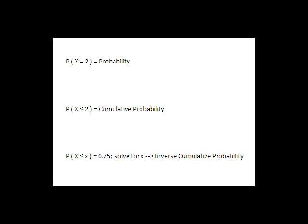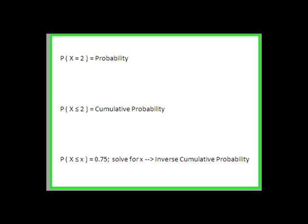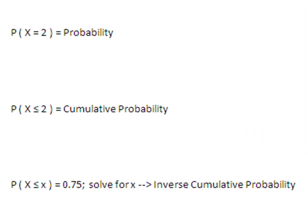The first type of probability that Minitab can compute is an equals probability, like the probability that x equals 2. If you're looking for a cumulative probability, like the probability that x is less than or equal to 2, Minitab can also give you that, but it will not compute the probability that x is less than 2.